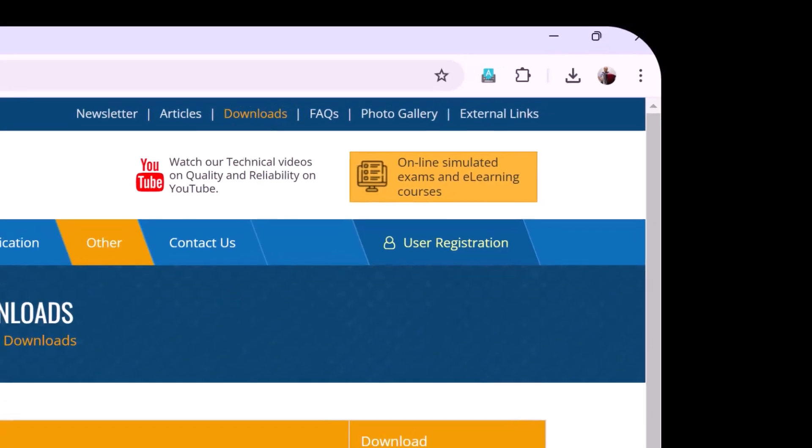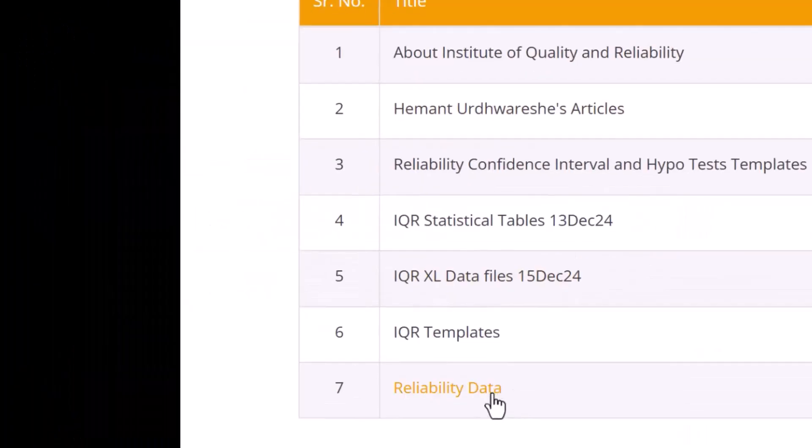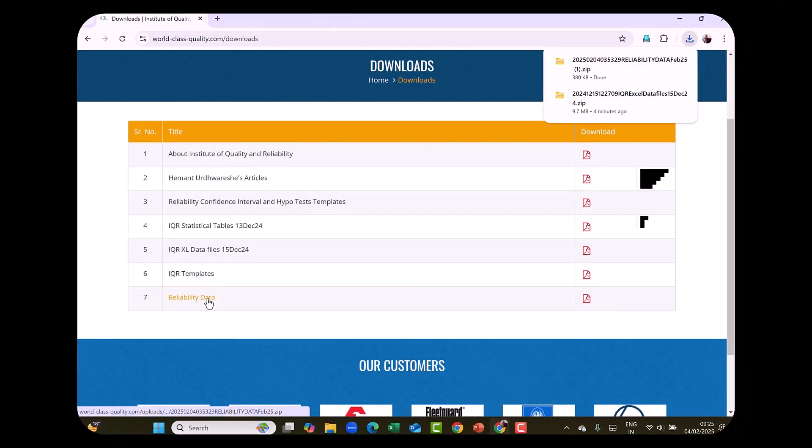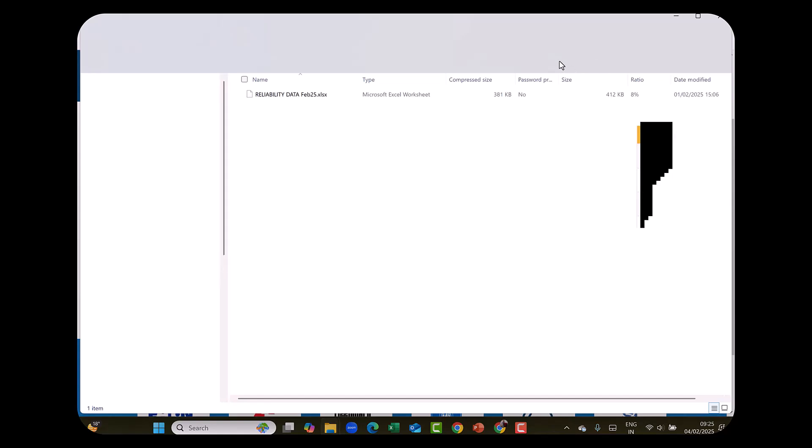Click on the downloads link and you will find the reliability data link. Click on that and you should be able to download it. It is a zip folder containing the reliability data file.